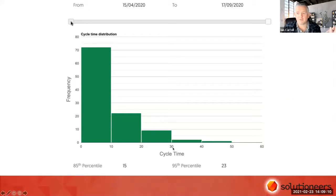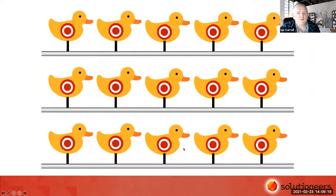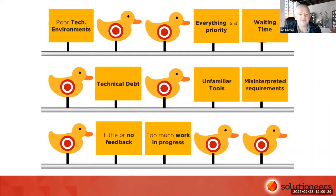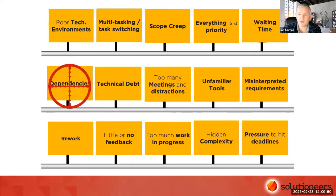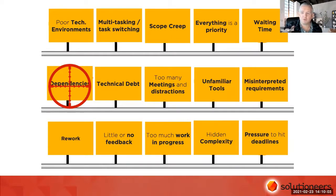This is a great exercise for retrospectives — start to attack your sources of variation. Common sources include poor technical environments, technical debt, unfamiliar tools, waiting time around the board, and too much work in progress — trying to do too much at once, where everything's a priority. There's a whole bunch of things that could affect the team's ability to be predictable. In today's talk, we're really going to focus on dependencies — when we have to hand off to other teams. Dependencies will create less predictable outcomes.